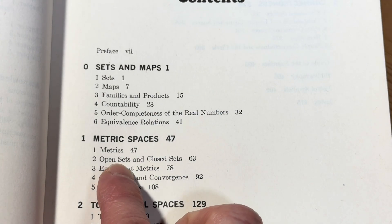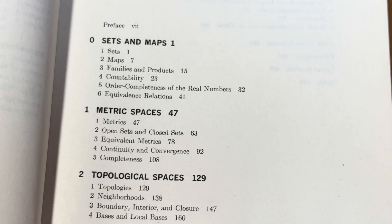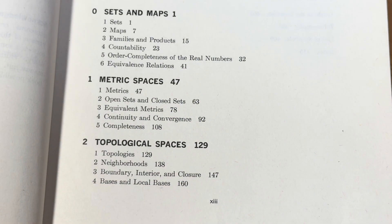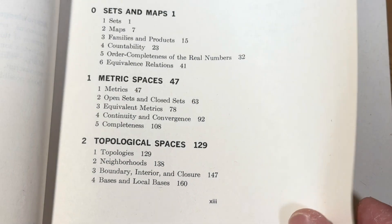Metric spaces. This is always really fun. It's on page 47. So you have metrics, open sets, and closed sets. Equivalent metrics. Continuity and convergence. And completeness. Two is on topological spaces. We have topologies, neighborhoods. Boundary, interior, enclosure, and basis, and local bases.